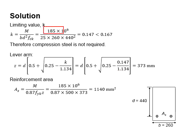Substitute the relevant values into the equations for k. You will obtain k equals 0.147. Check against 0.167 to determine if compression steel bar is required.